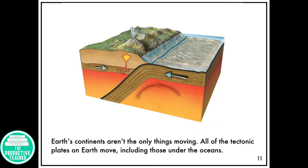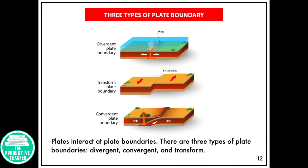Earth's continents aren't the only things moving. All of the tectonic plates on Earth move, including those under the oceans. Plates interact at plate boundaries, and there are three types of plate boundaries: divergent, convergent, and transform.